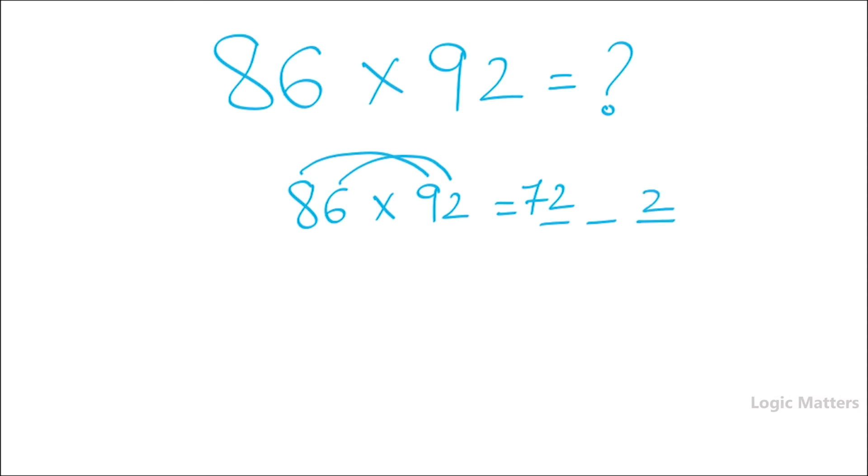So I'm taking 2 here and carry forward of 1 to the before number. So to get the middle number, we need to multiply 6 with 9. So 6 times 9 is 54, plus 8 multiplied by 2 is 16. So 54 plus 16 gives an answer of 70. Write 0 here and carry forward 7 over here.